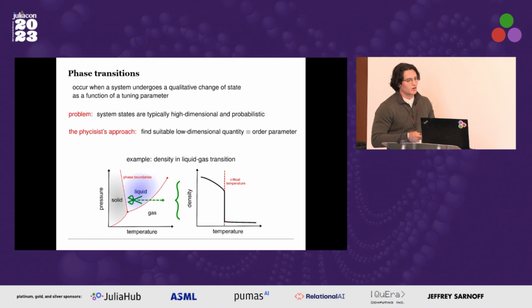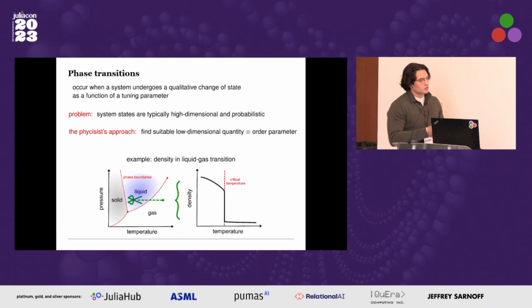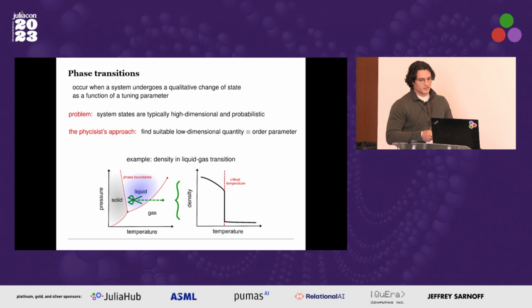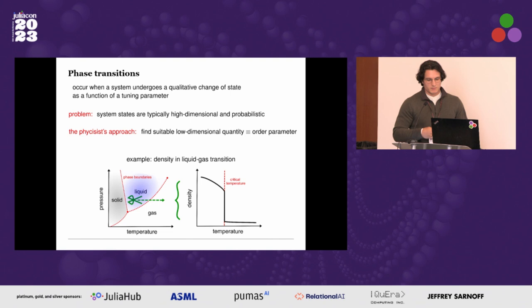Mapping out the phase diagram of a physical system is typically a hard task because the system state lives in a very high dimensional space and is probabilistic. For a given value of our tuning parameter we can find the system in various different states. The physicist's approach is to find a small set of suitable low-dimensional quantities — called order parameters — which capture the essence of each phase. For example, even though water is a very complex system, we can capture the liquid-to-gas transition by simply looking at density as a function of temperature, which shows a discontinuity at the critical temperature, allowing us to immediately read off that critical temperature.